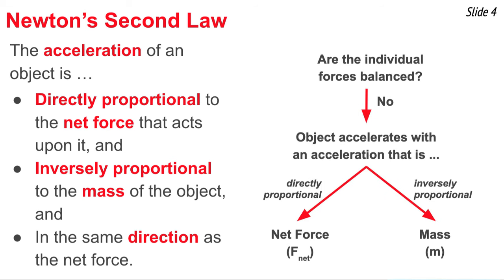Going back to the original question — are the individual forces balanced? If the answer is no, then we know the object accelerates. That acceleration has a magnitude that depends upon two variables: first, the net force, and second, the mass. It is directly proportional to net force and inversely proportional to mass. So now we have to ask: what exactly is meant by the net force?